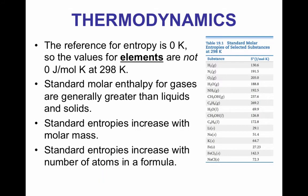As we look at the standard molar entropies of different substances, it's important to know that the reference for entropy is zero kelvin, so it's absolute zero. So the values for elements are not zero joules per mole per kelvin at 298, unlike the enthalpies. So when we focused on delta H, when you had O2, that delta H was zero. However, because our reference is zero kelvin, it's important to know that the elements are not zero for the entropy.